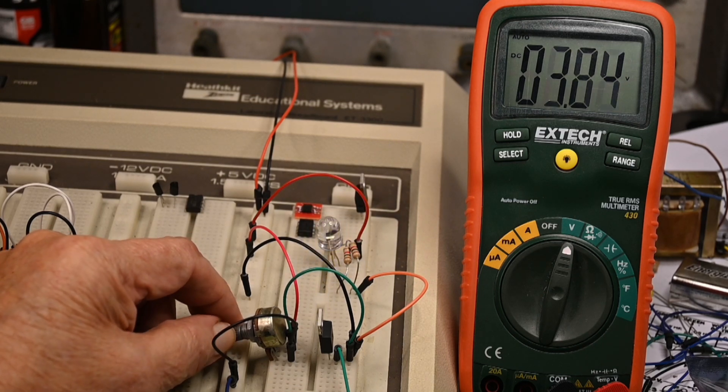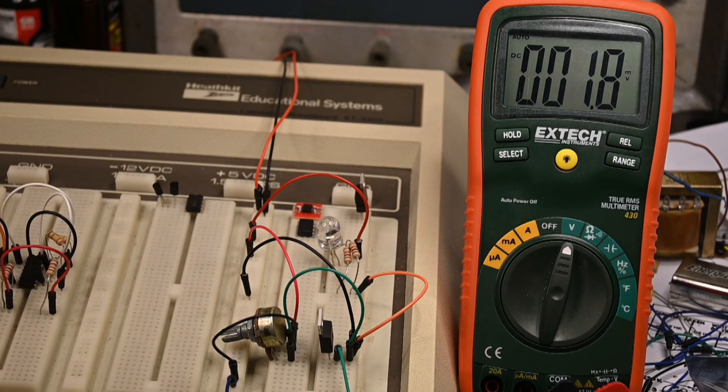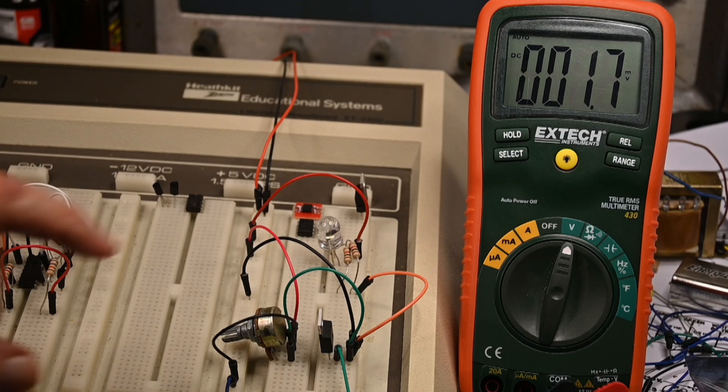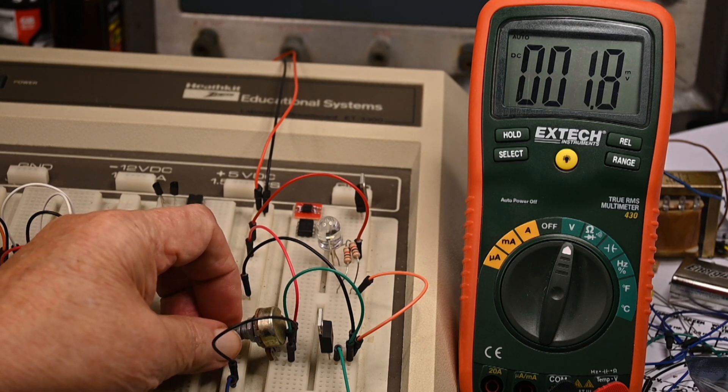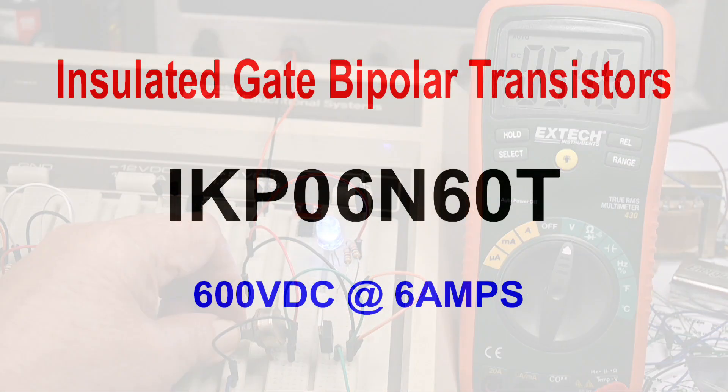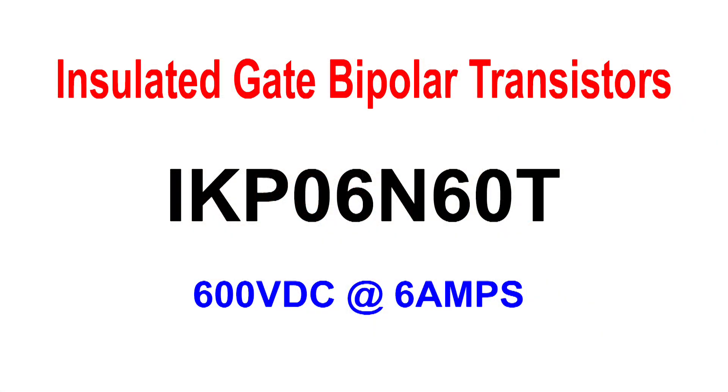So this device seems to me like it is pretty much an on-off device. You wouldn't really want to use this in an audio amplifier. It must be really great for switching though. So this insulated gate bipolar transistor should be very useful in high voltage, high current pulsing circuits.